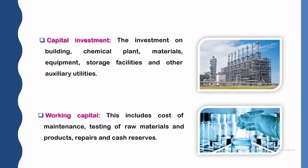Second, working capital. This includes cost of maintenance, testing of raw materials and products, repairs, cash reserves, etc. Working capital is basically the expense required for maintenance, testing of incoming raw materials or products, and repairs. Whatever cost we are going to spend on such items is the working capital. Capital investment covers building, chemical plant, materials, equipment, and storage facilities, while working capital covers maintenance, testing of raw materials and products, repairs, and cash reserves.